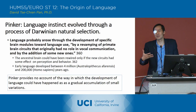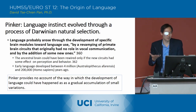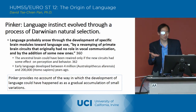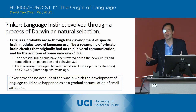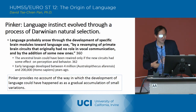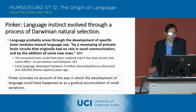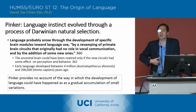To sum up Pinker's theory of language development: the language organ was a module that developed through natural selection, through a revamping of primate brain circuits that originally had no role in vocal communication and by the addition of some new ones. That's his thesis about the origin of language — a modern account insisting on natural selection, but a little short on details of how this might have happened. He says this early brain could have been rewired only if the new circuits had some effect on perception and behavior.